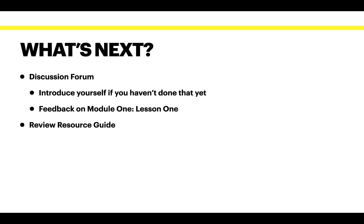So what's next? You should go into the discussion forum. One of the great things about Roam Research is that it has a real community, and encouraging people who use it in the same way to share ideas, results, and new findings is really important — we can create that within this beta course. When you go into the discussion forum, introduce yourself if you haven't done so yet, provide feedback on Module 1 Lesson 1 if the questions are up there, and spend some time reviewing your resource guide.